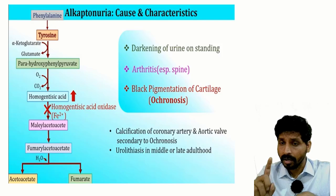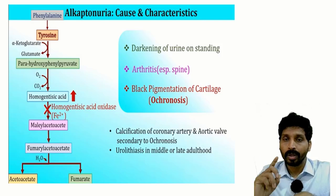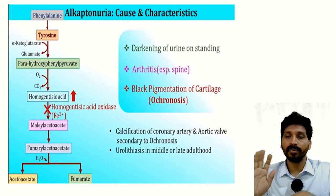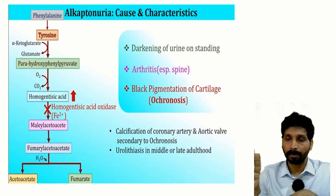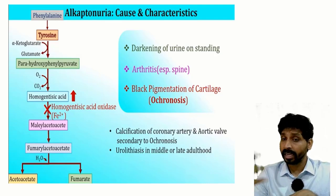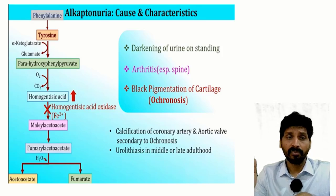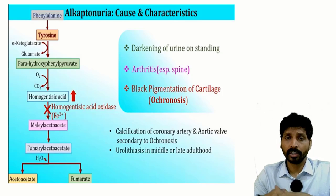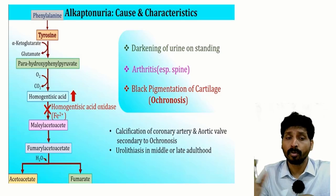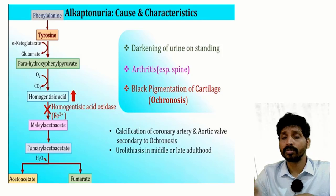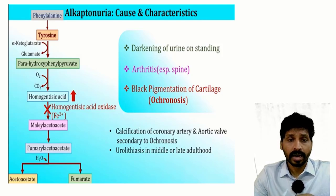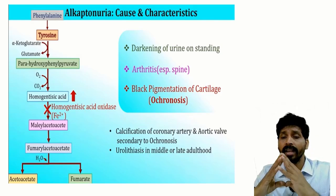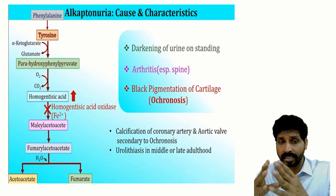Phenylalanine and tyrosine are both aromatic amino acids. Phenylalanine is essential whereas tyrosine is non-essential, because tyrosine can be synthesized from phenylalanine — if your diet contains phenylalanine, that is sufficient to supply tyrosine as well. In alkaptonuria, tyrosine is processed further to para-hydroxyphenylpyruvate and then to homogentisic acid. This homogentisic acid must proceed further to maleylacetoacetate and fumarylacetoacetate. Homogentisic acid oxidase is an iron-dependent enzyme.